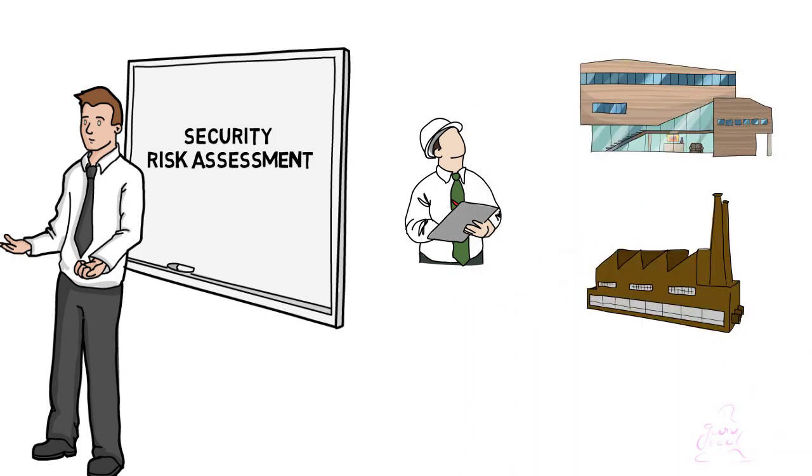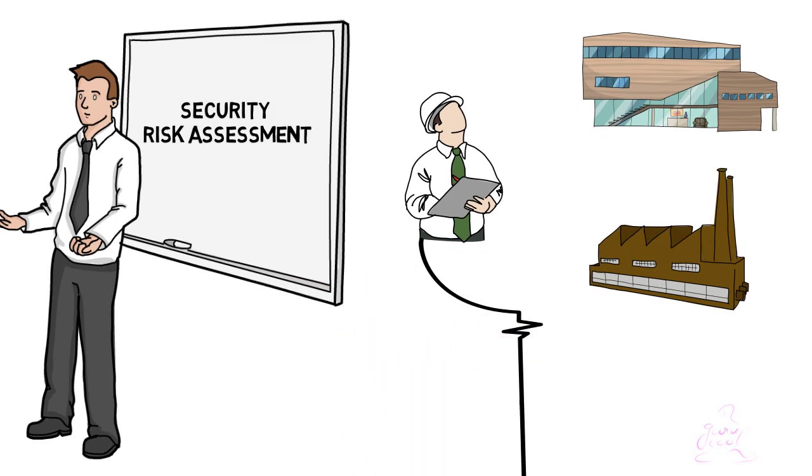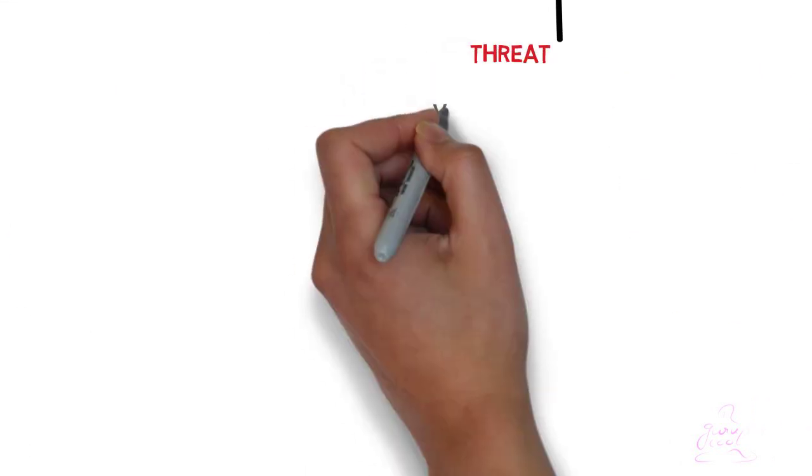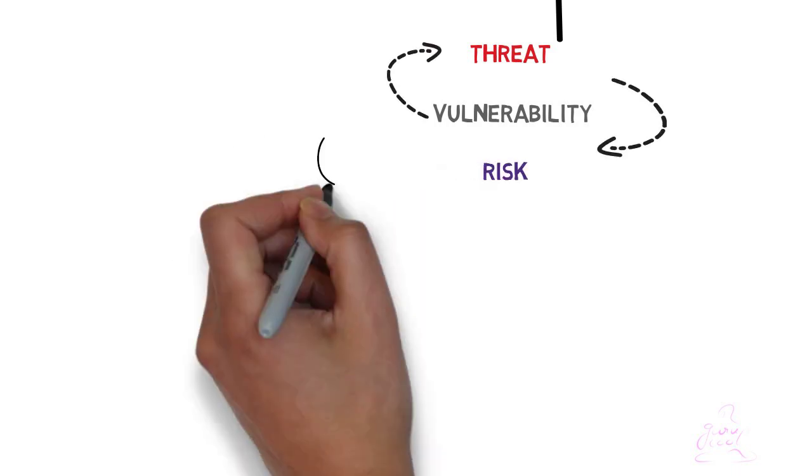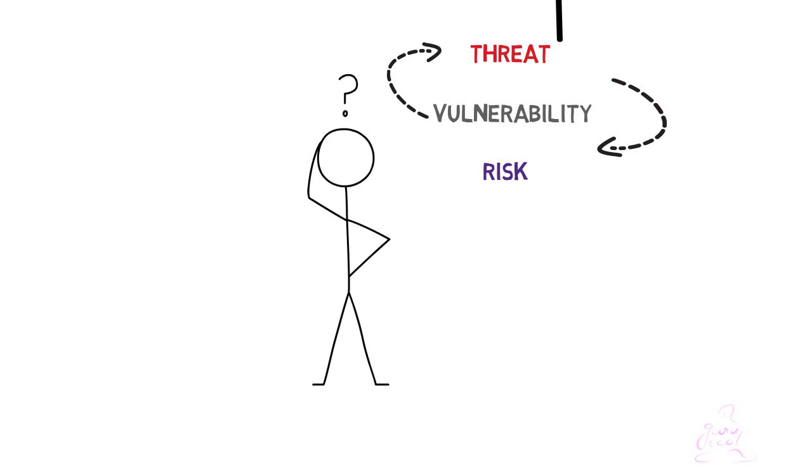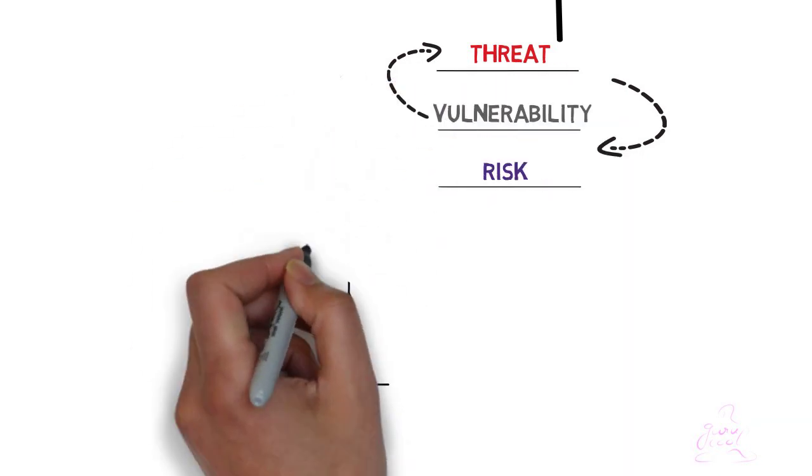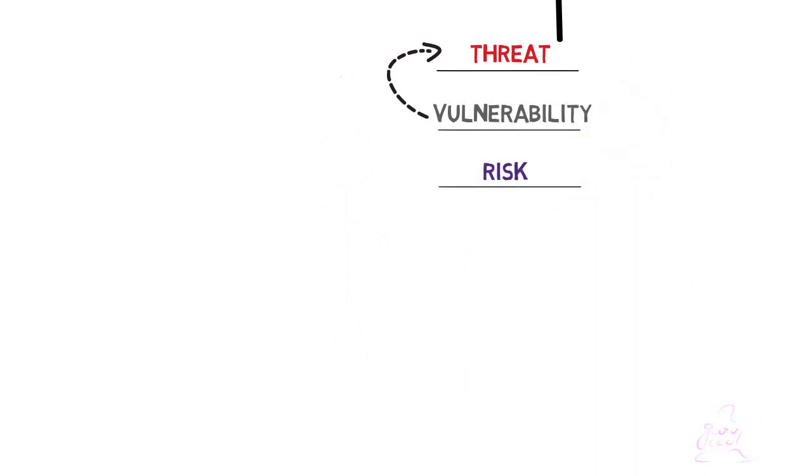Before we dive straight into it, it's important for us to understand the words such as threat, vulnerability, and risk, because they are often interchanged and misinterpreted even though they have different meanings. It is essential to understand each word's definition and their relationship with the concepts they represent.